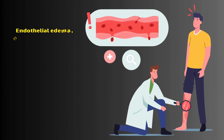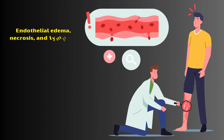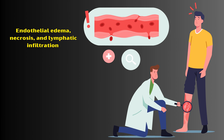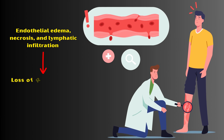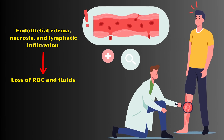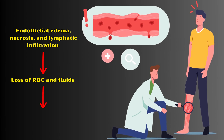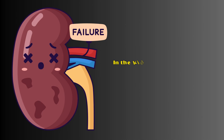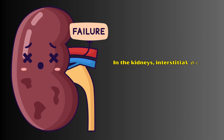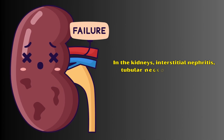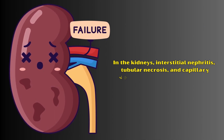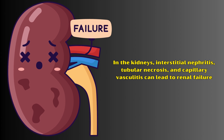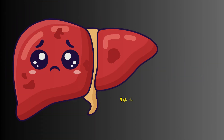Vasculitis in capillaries is the most consistent finding in leptospirosis. Endothelial edema, necrosis, and lymphatic infiltration can lead to loss of red blood cells and fluids, resulting in hypovolemia. In the kidneys, interstitial nephritis, tubular necrosis, and capillary vasculitis can lead to renal failure.